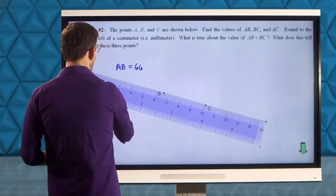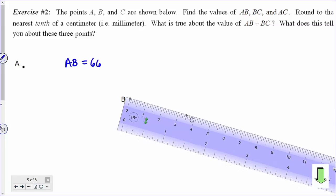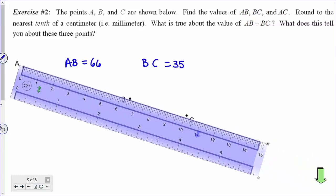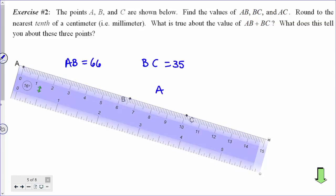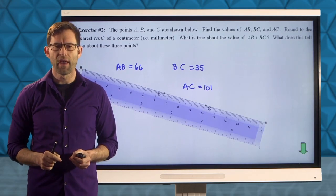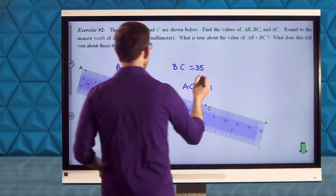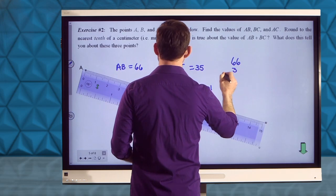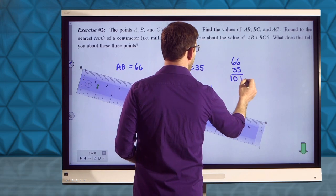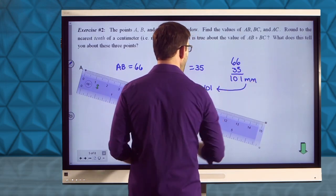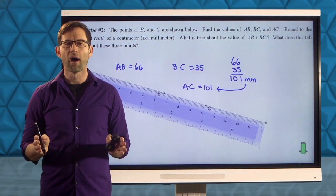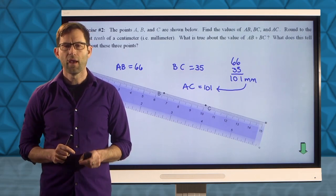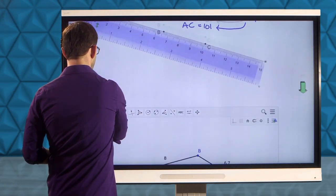Let me take my ruler and move it down to here. The length of BC looks like 35 millimeters. And let's take a look at AC. The length of AC is equal to 101 millimeters. Now, what do those three measurements tell us about points A, B, and C? Or specifically, what does the sum of AB plus BC tell us? Well, if we do my 66 millimeters plus my 35 millimeters, what I find is that it's 101 millimeters, exactly the same length as AC. And what that now tells you is that the three points lie in a straight line. They are what are known as collinear.